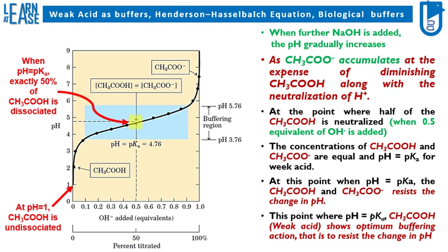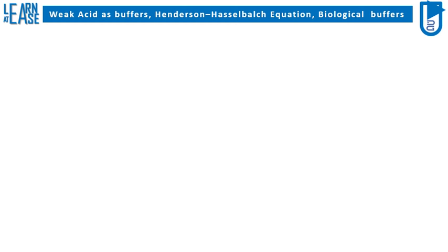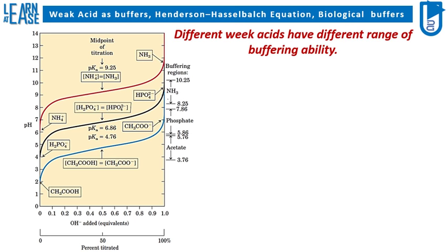For the titration curve, the buffering region is the value ranging from +1 to -1 from the pKa value of a particular weak acid. It should be remembered that different weak acids have different ranges of buffering ability, based on the characteristic pKa value of each individual weak acid.